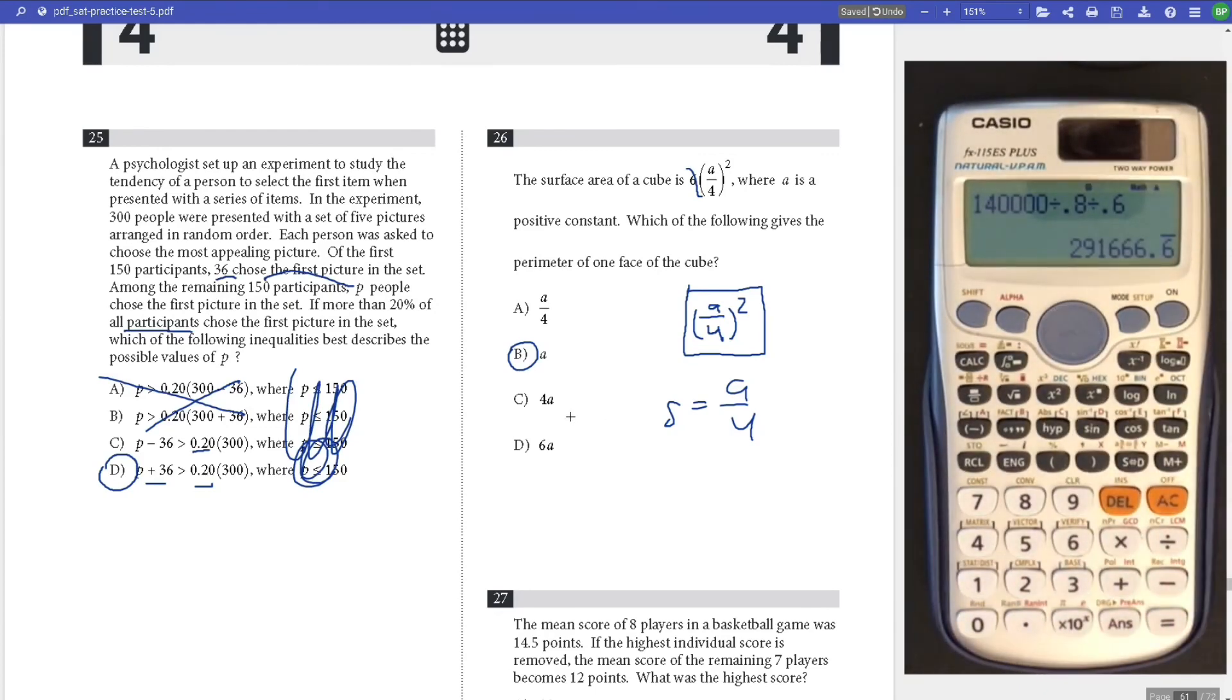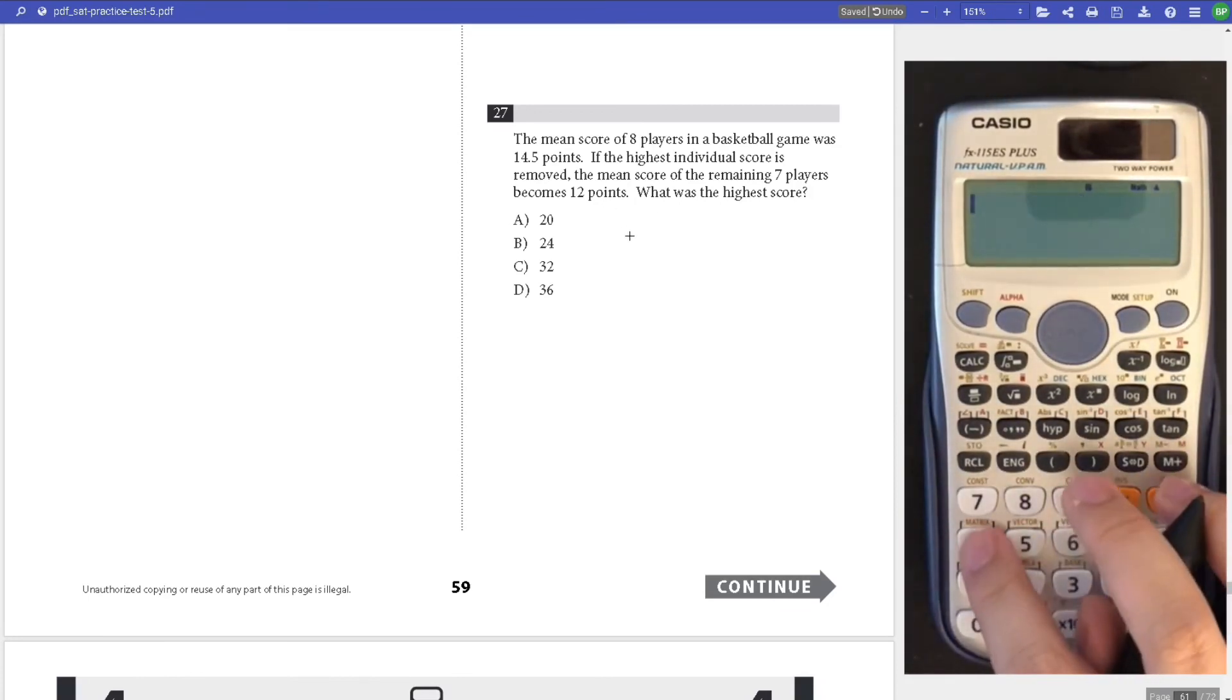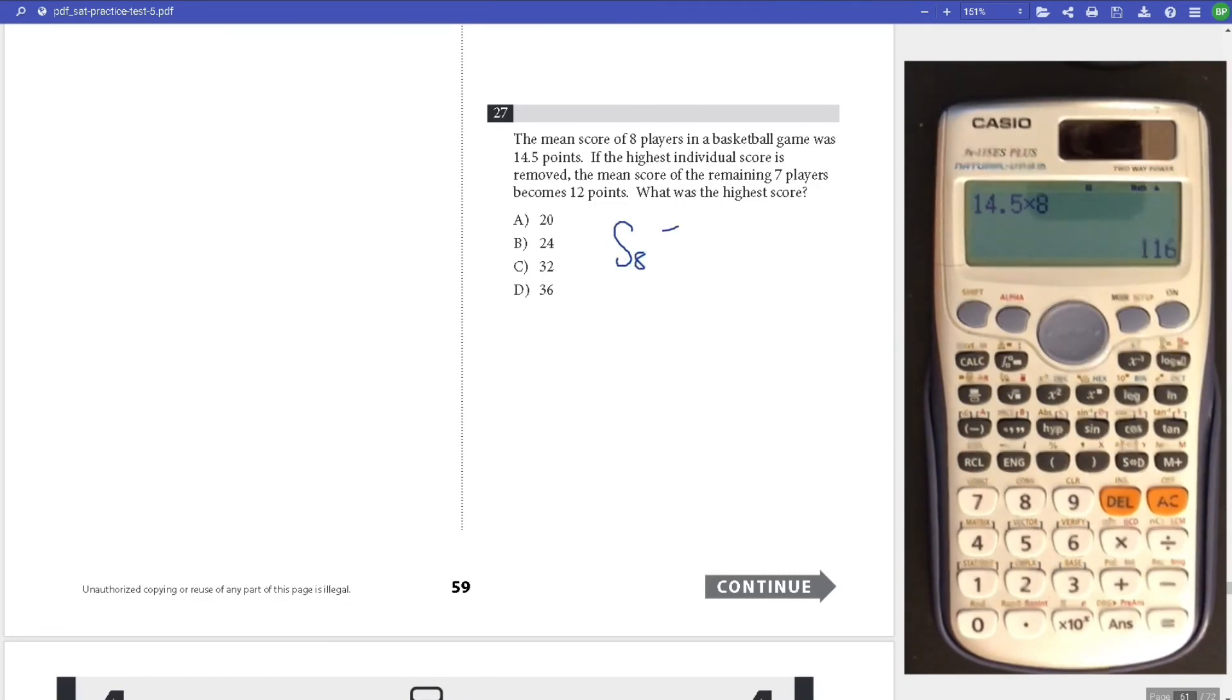Number 27, the mean score of eight players in a basketball game was 14.5. The highest individual score is removed, the mean score of the remaining seven players becomes 12 points. What was the high score? The total sum was 14.5 times 8 equals 116. So 116 minus x, the highest score, divided by 7 equals 12. So 84 equals 116 minus x, x equals 32. Answer is C.